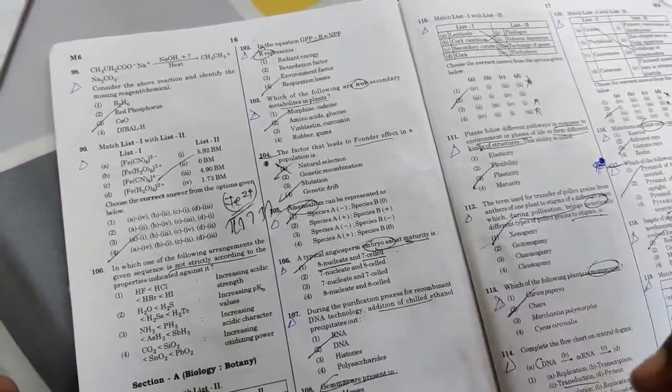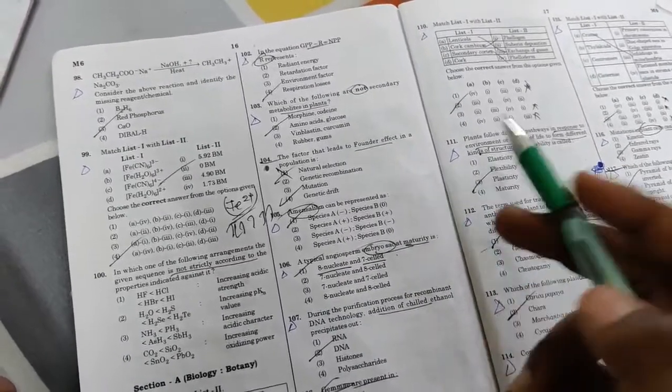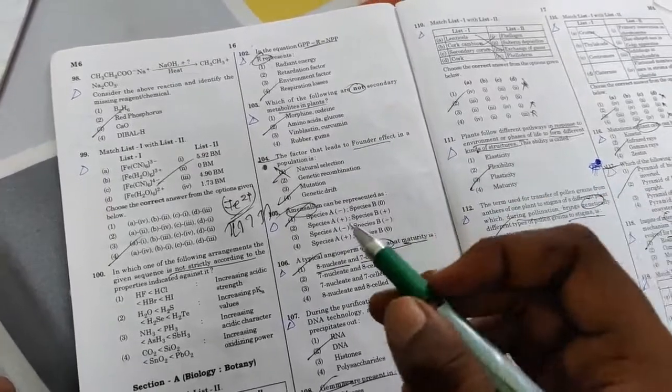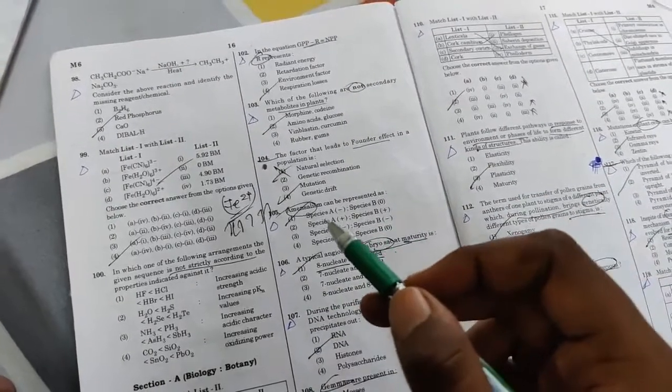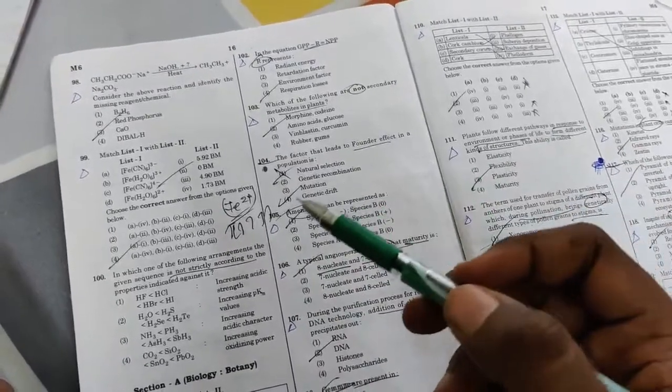There were four questions which came out of NCERT. If you hadn't read above NCERT, you wouldn't have got this right. Even if you did, it would be like guesswork.